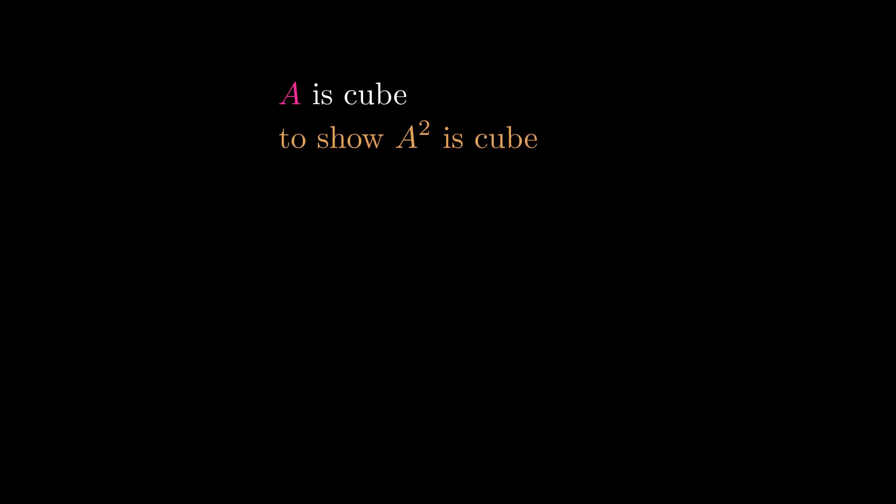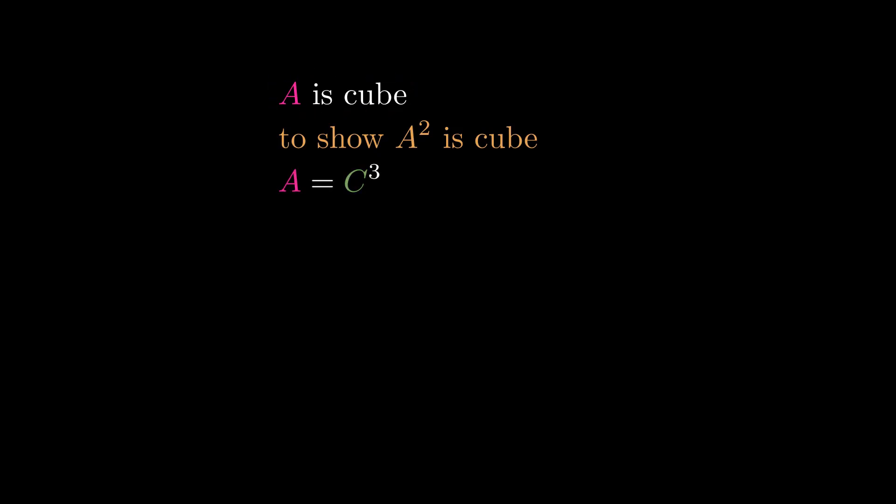Let a be a cube number. We will show that a squared is also a cube. Let c cubed equal a, so c is the side of the cube a.